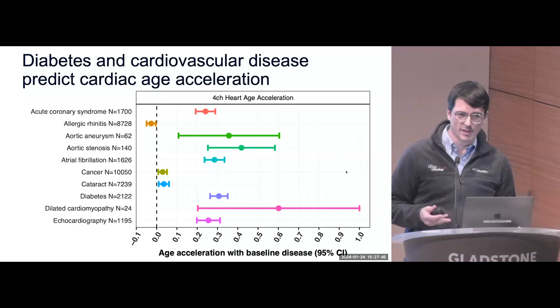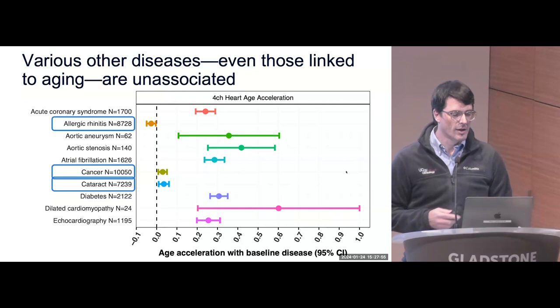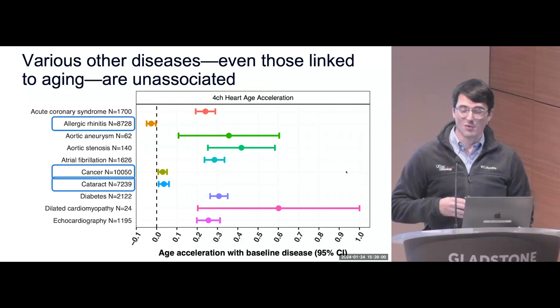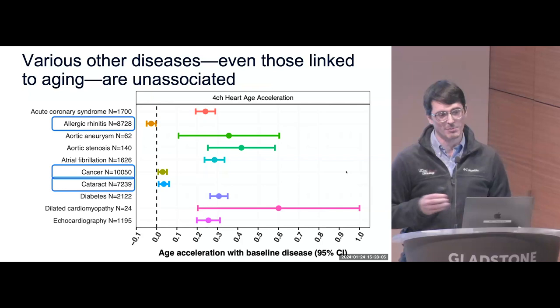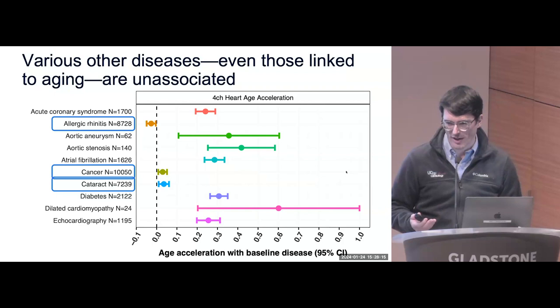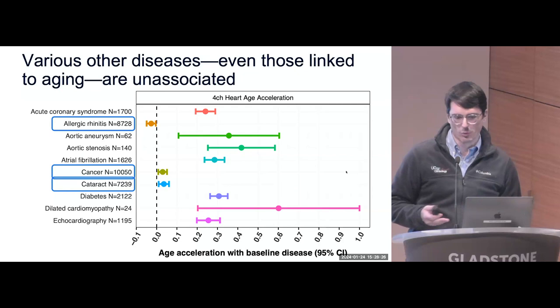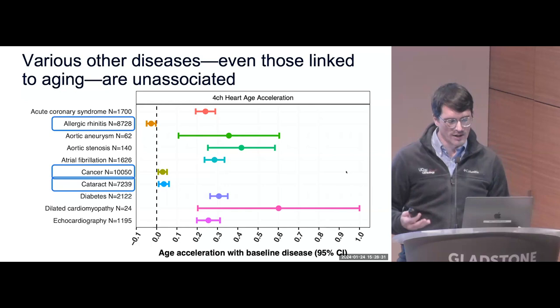Looking at prevalent disease: people who walk into the study with a prior diagnosis of dilated cardiomyopathy, aortic aneurysm, AFib, or diabetes, or who a doctor thought needed an echo, tend to have accelerated cardiac aging by about half a year. Reassuringly, random diseases that shouldn't be associated with cardiovascular disease — allergic rhinitis, cancer, cataracts — are not associated with cardiac age acceleration, confirming this is not simply dragging along all age-associated disease.